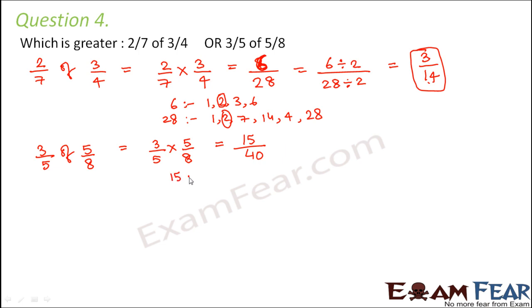So again if you look at their factors: 15 is 1, 3, 5 and 15, and 40 is 1, 2, 5, 4, 10, 8, 20 and 40.